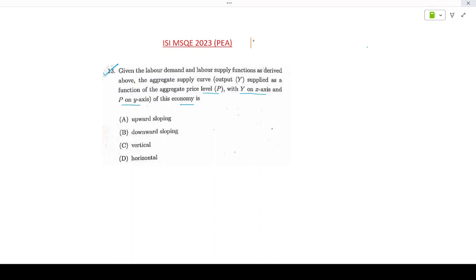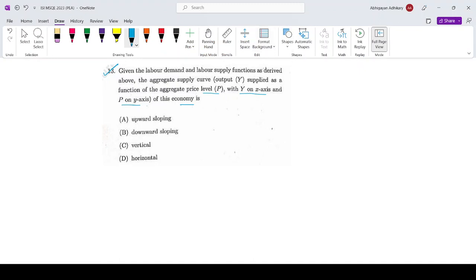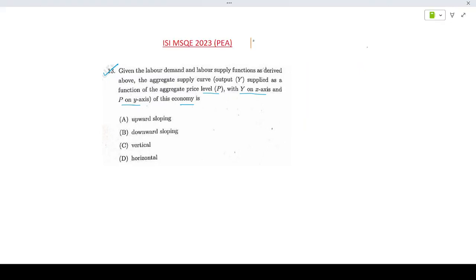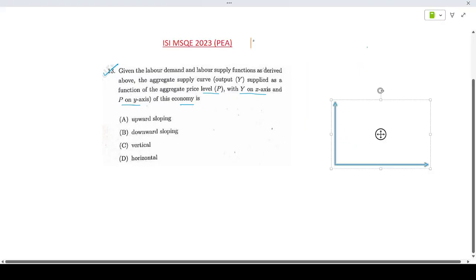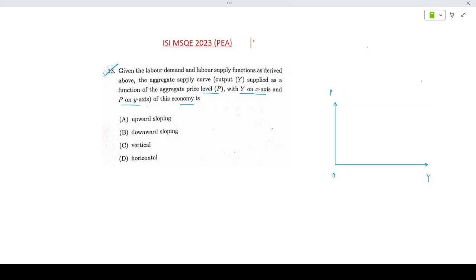If I just take a look at the structure that we are talking about, we need output on the horizontal axis and price on the vertical axis. Using this information, we need to understand the shape of the aggregate supply curve.